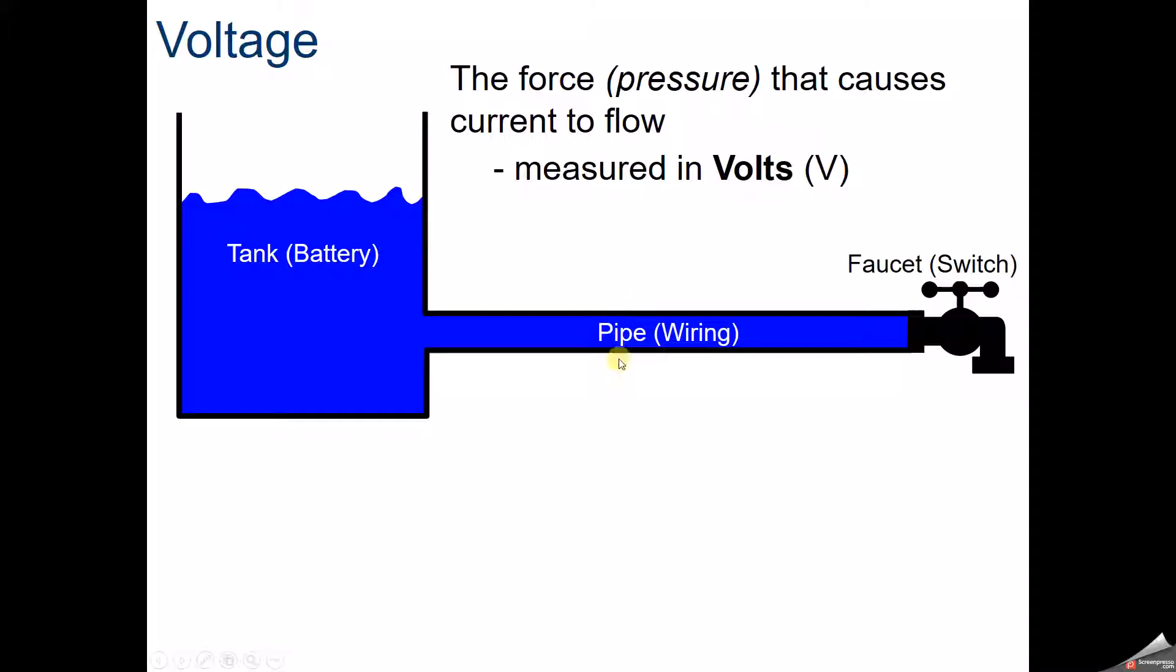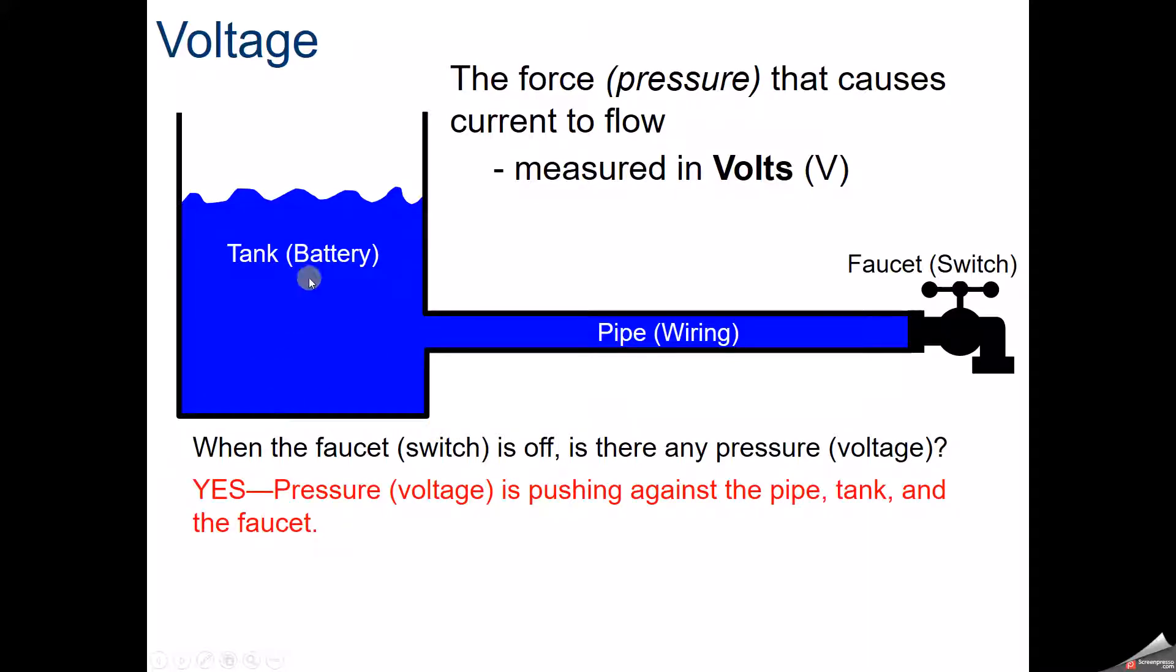Voltage is the pressure that causes current to flow, measured in volts. When the switch is off, is there any pressure? Yes, there's pressure inside the pipe going against the switch, trying to get through. The tank has pressure as it pushes the water through the pipe, and the faucet pushes back. Therefore, nothing flows out.